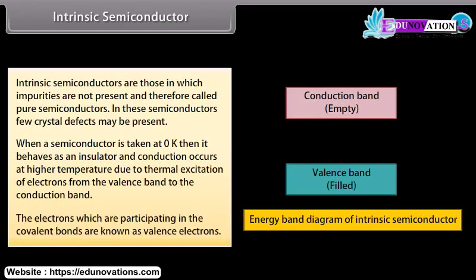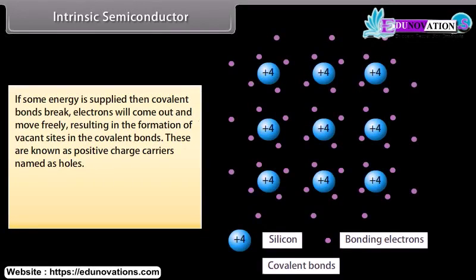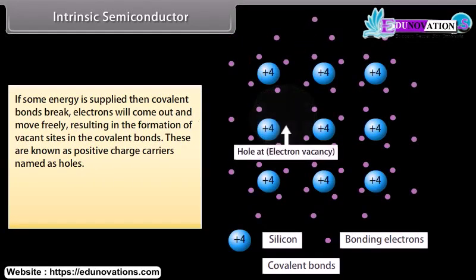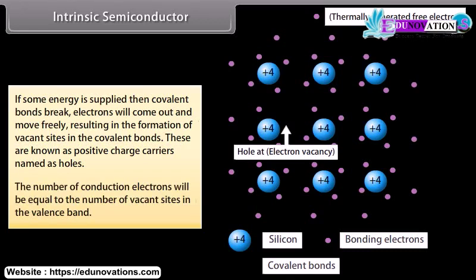The electrons participating in the covalent bonds are known as valence electrons. If some energy is supplied, the covalent bonds break. Electrons will come out and move freely, resulting in the formation of vacant sites in the covalent bonds. These are known as positive charge carriers, named as holes. The number of conduction electrons will be equal to the number of vacant sites in the valence band.